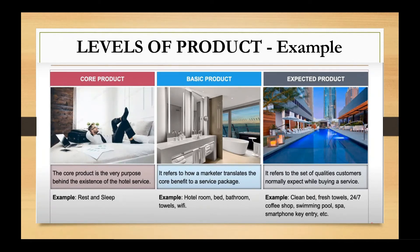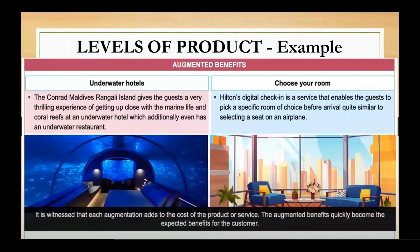Then comes the third level — the expected level — whereby you expect a clean bed, fresh towels, a 24x7 coffee shop, swimming pool, spa, and a smartphone key entry system. Now, what is very interesting is that the smartphone key entry system was considered an augmented benefit five to ten years ago. But when many five-star and seven-star hotels started providing this service, it turned into an expected level benefit. So augmented benefits, after a period of time, may become expected benefits — and then you have to design new augmented benefits to satisfy your consumer.